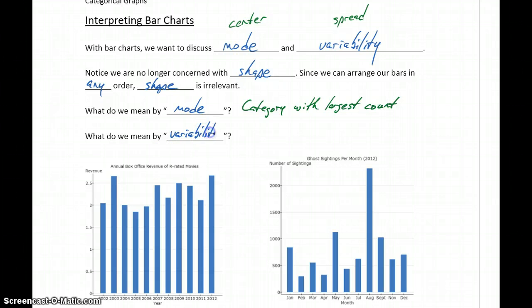Variability can be a little bit trickier to understand. It's a little bit less intuitive. So variability can be low if one or very few categories have most of the counts. So that is one category, or a few categories have very high counts, and all the other categories are relatively low.